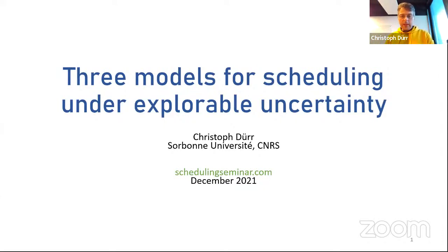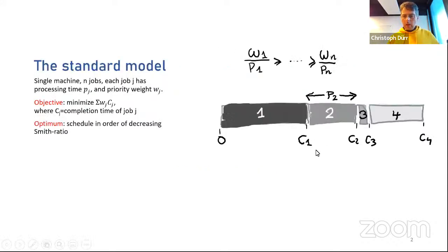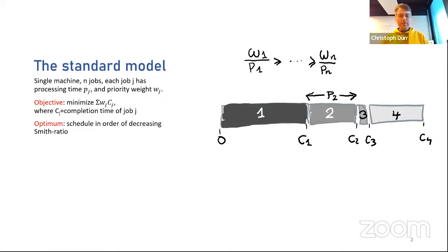Scheduling with uncertainty has been studied a lot, but the exploratory part is something new. There are three models that have been studied in the very recent past, and I will give an overview. Let's start with a very simple scheduling problem. Most scheduling papers start with 'here is the most important scheduling problem,' and then some description — I don't know if this is the most important, but this is a very elementary problem.